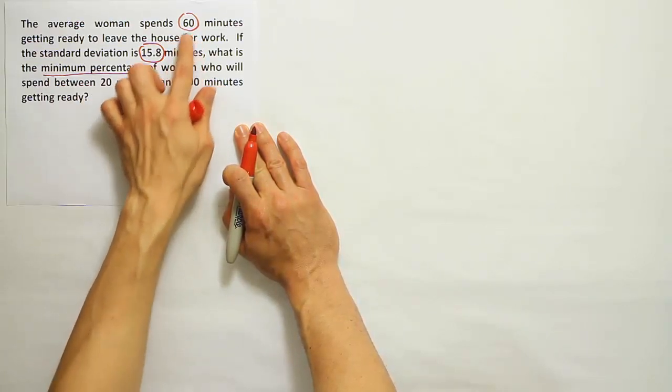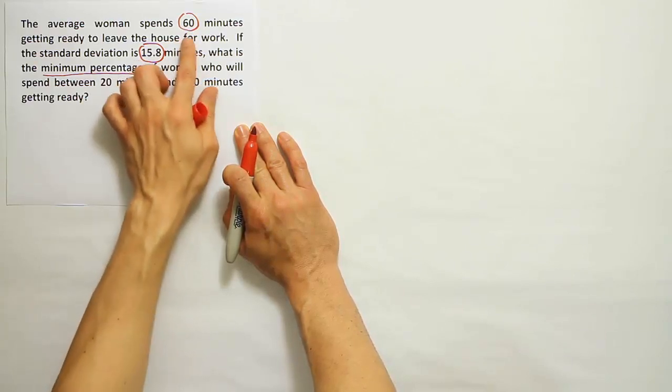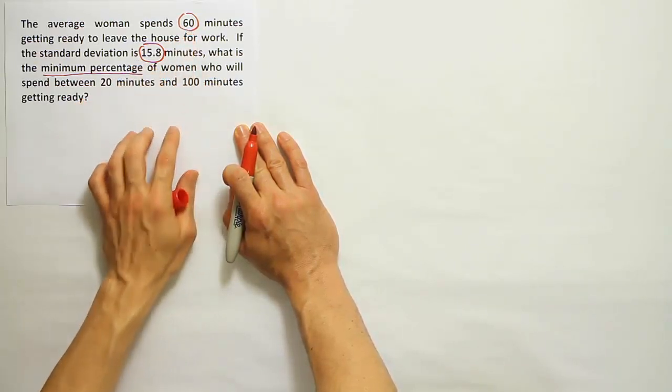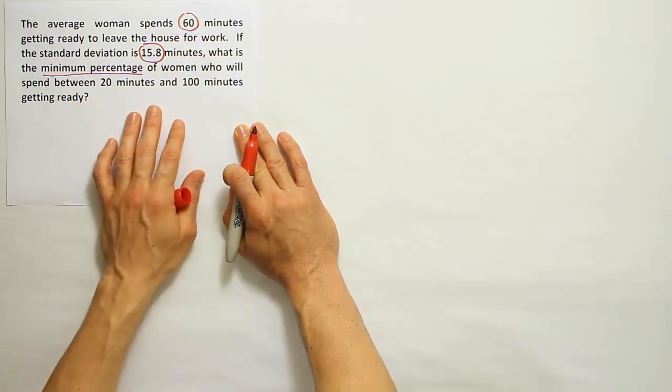So in other words, it's 40 above 60 to get to 100 and 40 below 60 to get to 20. So the interval is symmetric around the mean. This is a classic Chebyshev's theorem problem.